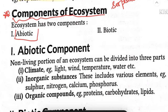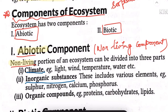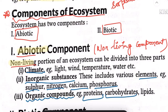The components of an ecosystem are: first, abiotic — non-living components. Abiotic components include climate conditions such as light, temperature, and water. They also include inorganic substances like micro and macronutrients — nitrogen, calcium, phosphorus, sulfur — and organic compounds such as proteins, carbohydrates, lipids, and fats.